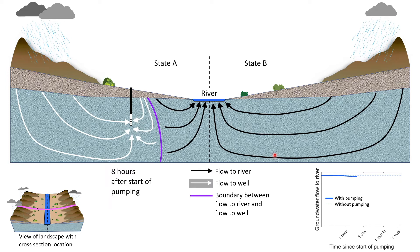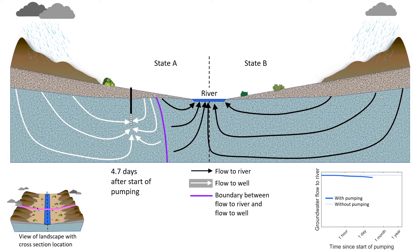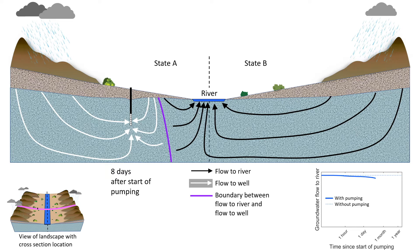At 8 hours, flow paths in state B begin to be affected by the pumping. At about 5 days, groundwater flows from state B begin to cross the boundary to state A but still discharge to the shared river. At 8 days, the groundwater flow to the river begins to decrease more rapidly.